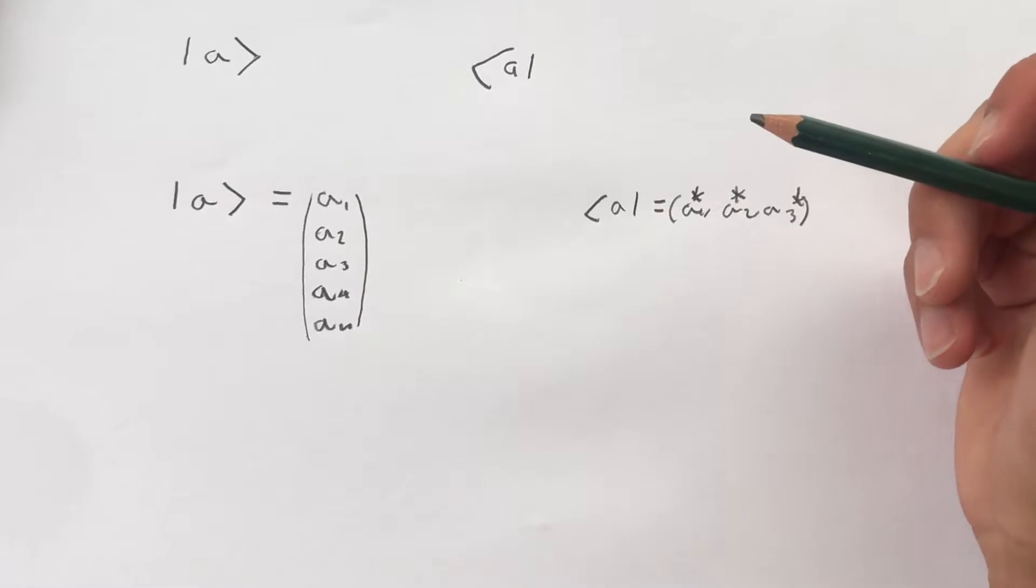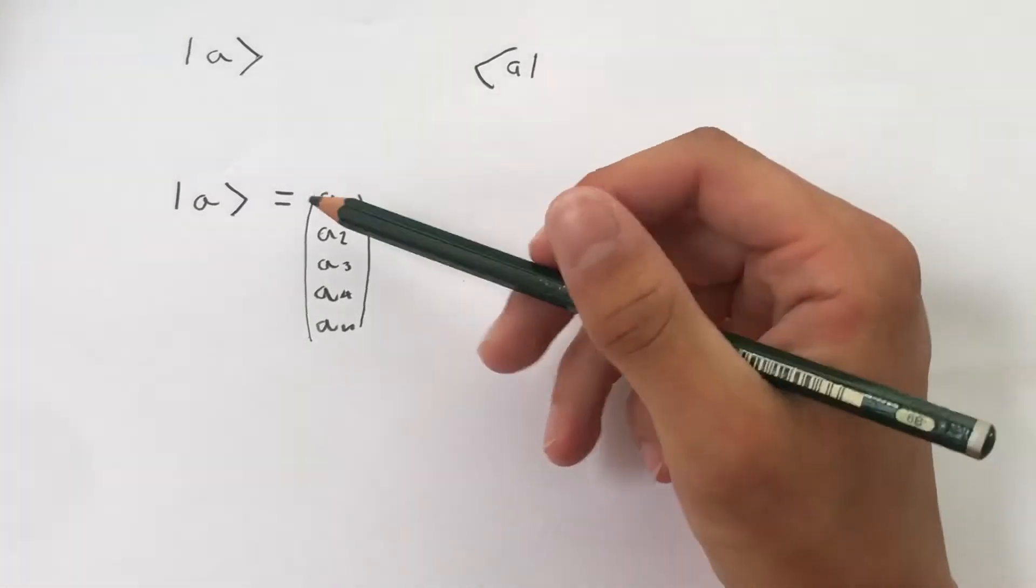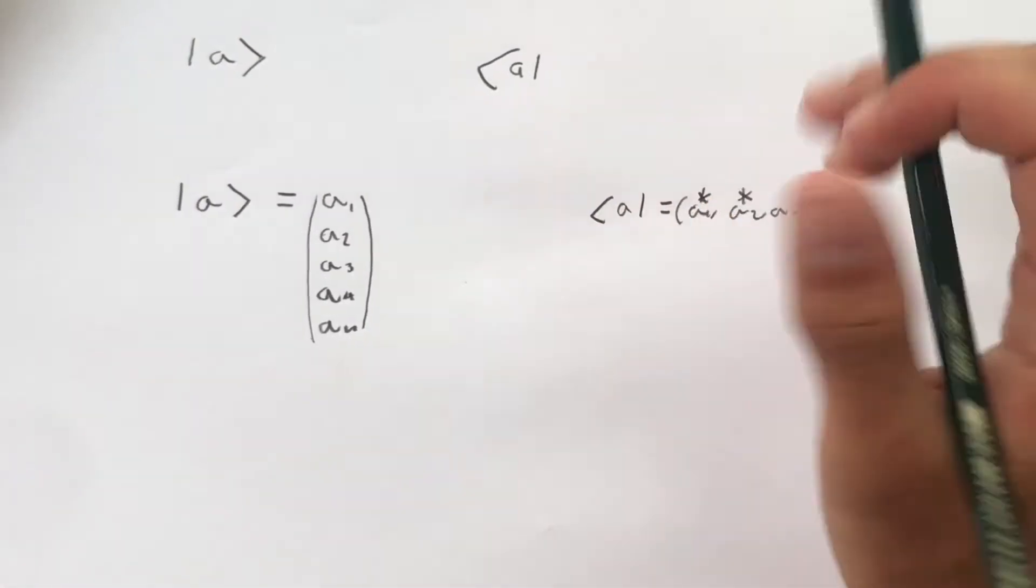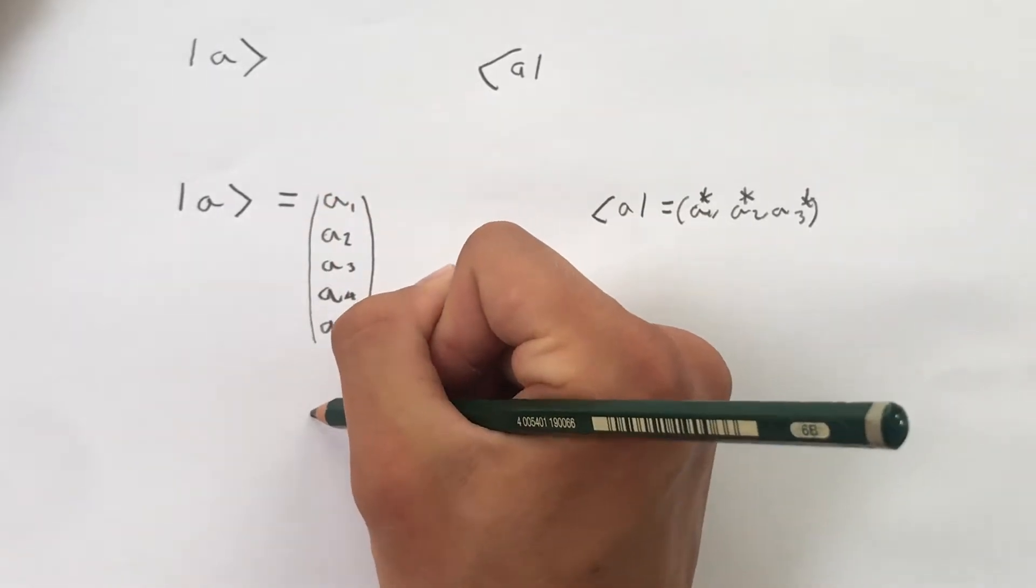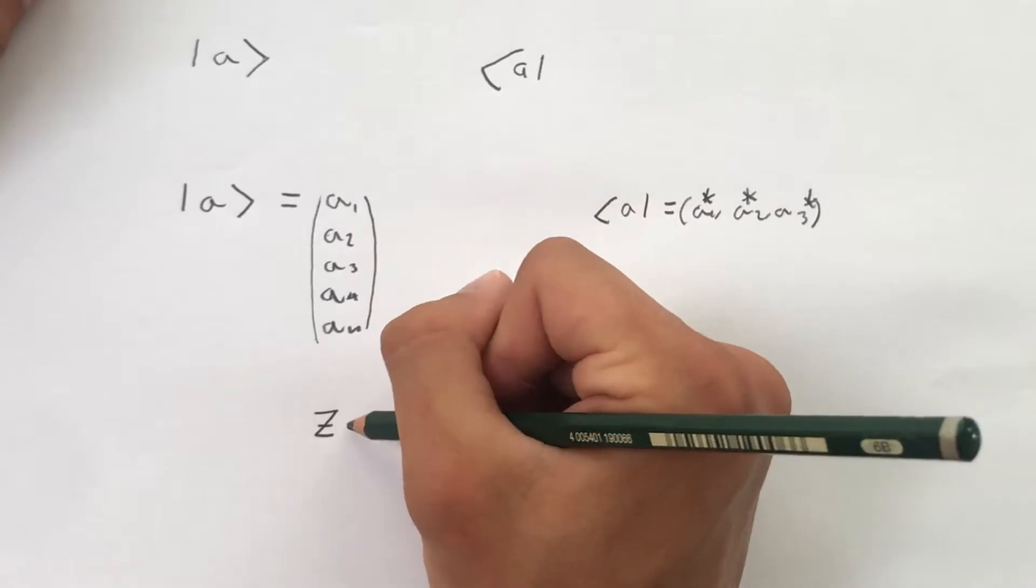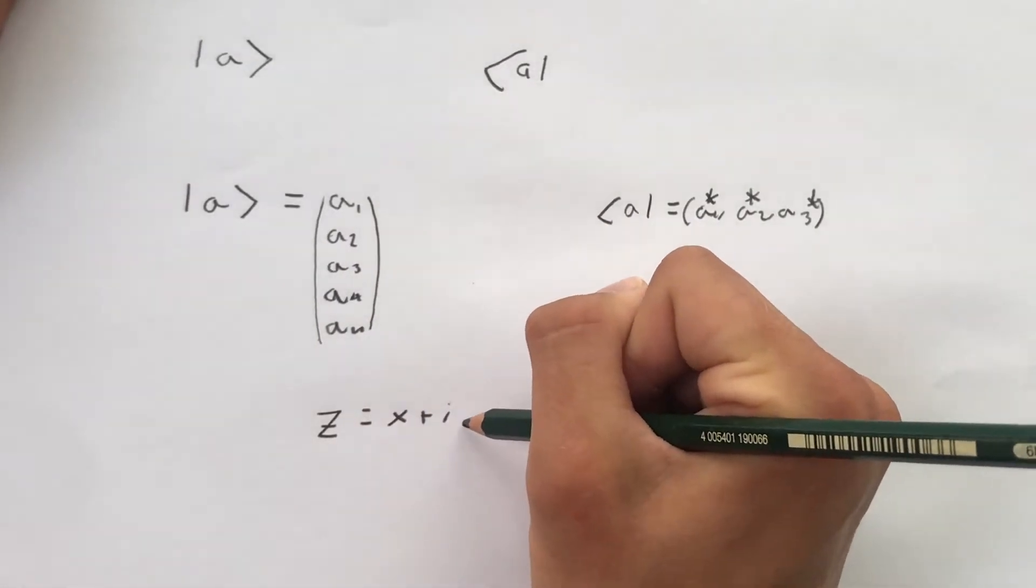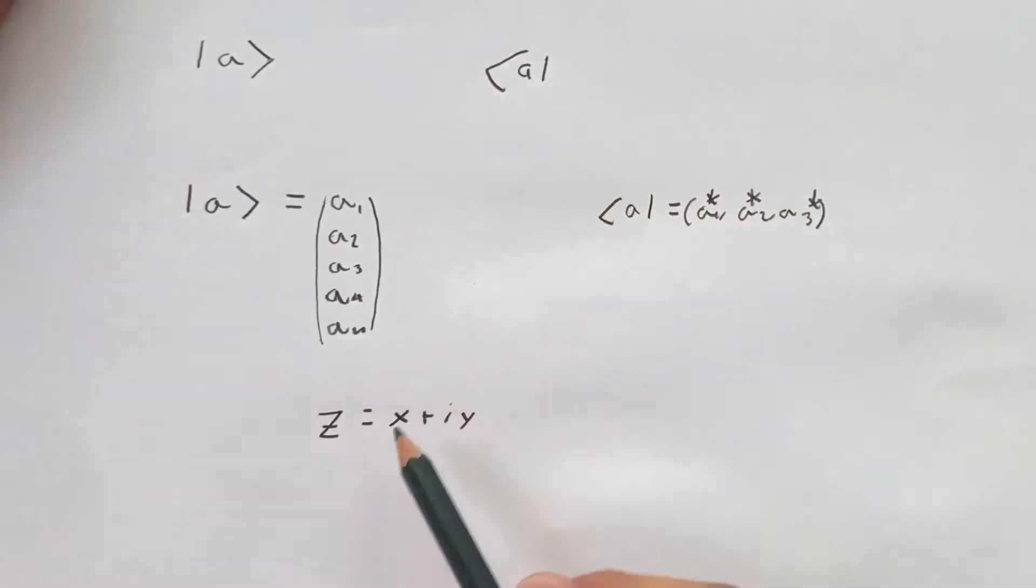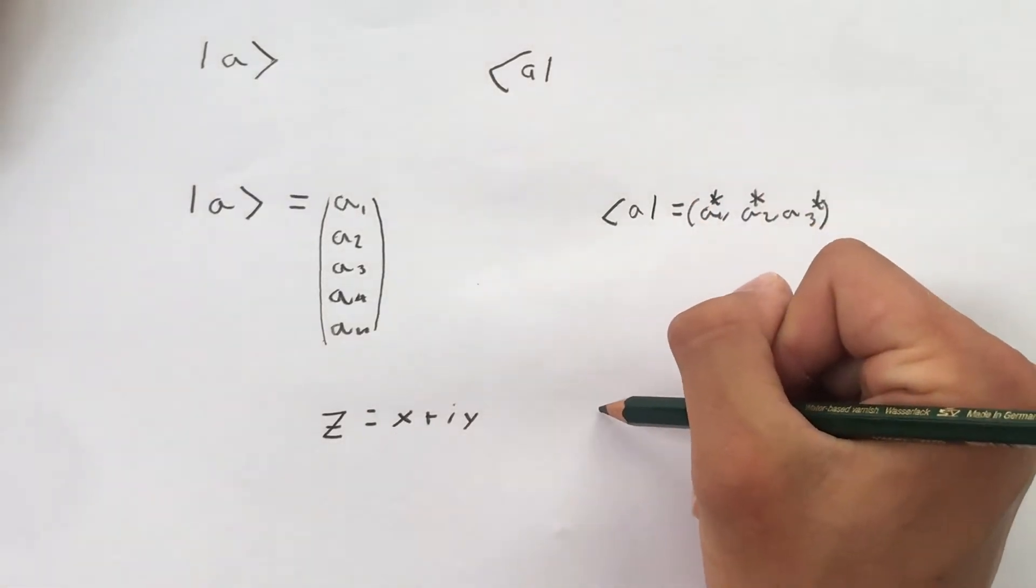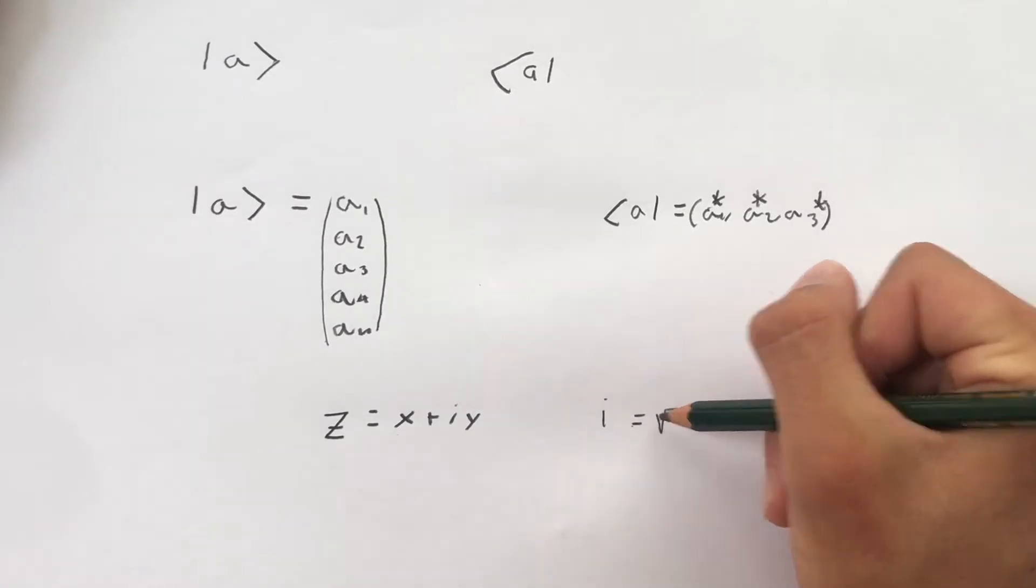So what I mean by complex conjugated is that these numbers are complex numbers in the first place. Not always, but most of the time they will be complex numbers. So a complex number is simply the term z, which we use to describe complex numbers. That is equal to x plus i multiplied by y, where x and y are real numbers and i is the imaginary term, the square root of minus 1.